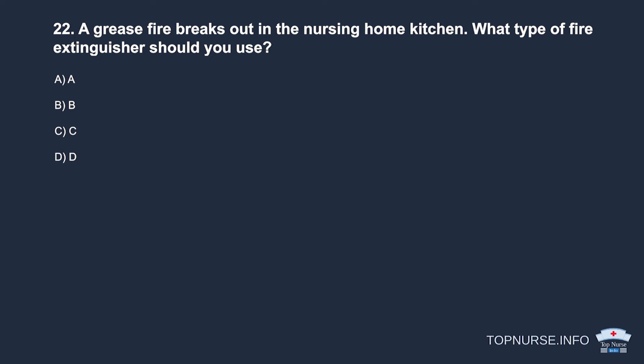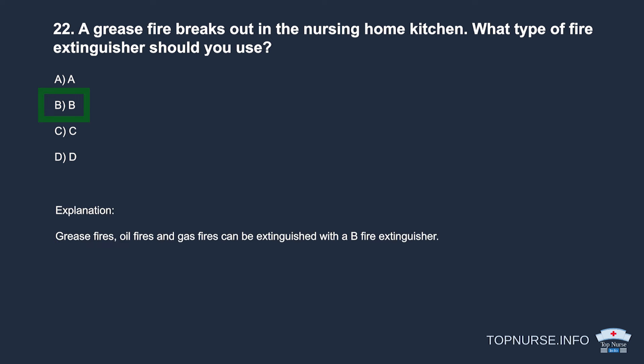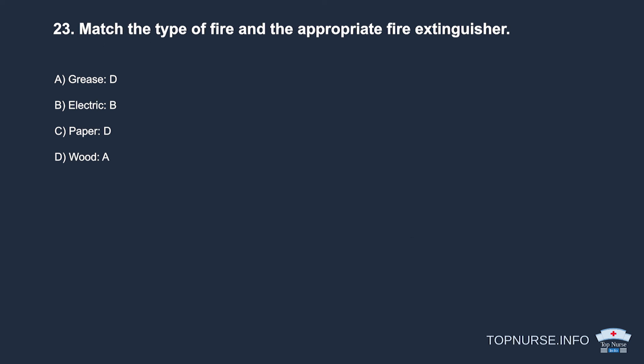Question 22: A grease fire breaks out in the nursing home kitchen. What type of fire extinguisher should you use? Correct answer: b. Grease fires, oil fires, and gas fires can be extinguished with a Type B fire extinguisher.